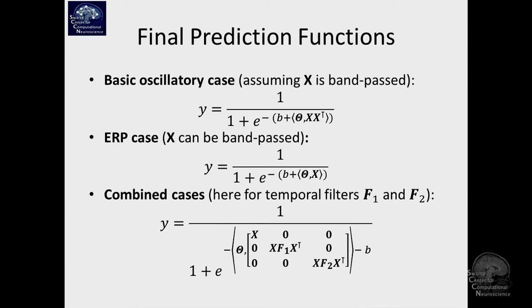For an oscillatory process, it's X times X transpose, which is proportionate to the covariance matrix in a product with this theta. For the ERP case, it's just the X itself, just the data trial.